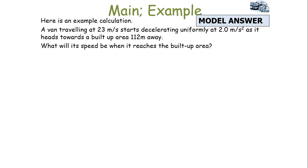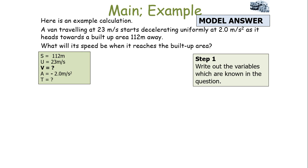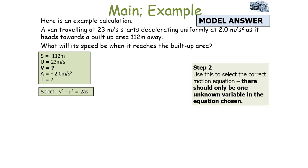Now let's look at another question. A van travelling at 23 metres per second starts decelerating uniformly at 2.0 metres per second squared as it heads towards a built-up area 112 metres away. What will its speed be when it reaches the built-up area? Step one: write out S, U, V, A and T. We don't have V or T, but we want to find V. We can't use A equals V minus U over T because there are two unknown variables — V and T — so we must use V squared minus U squared equals 2AS.